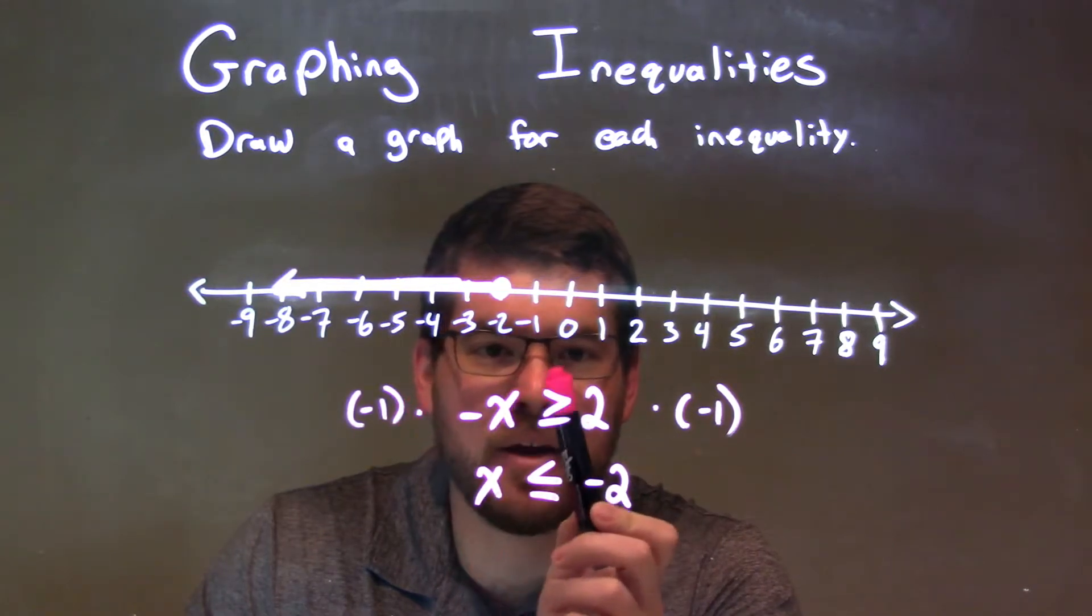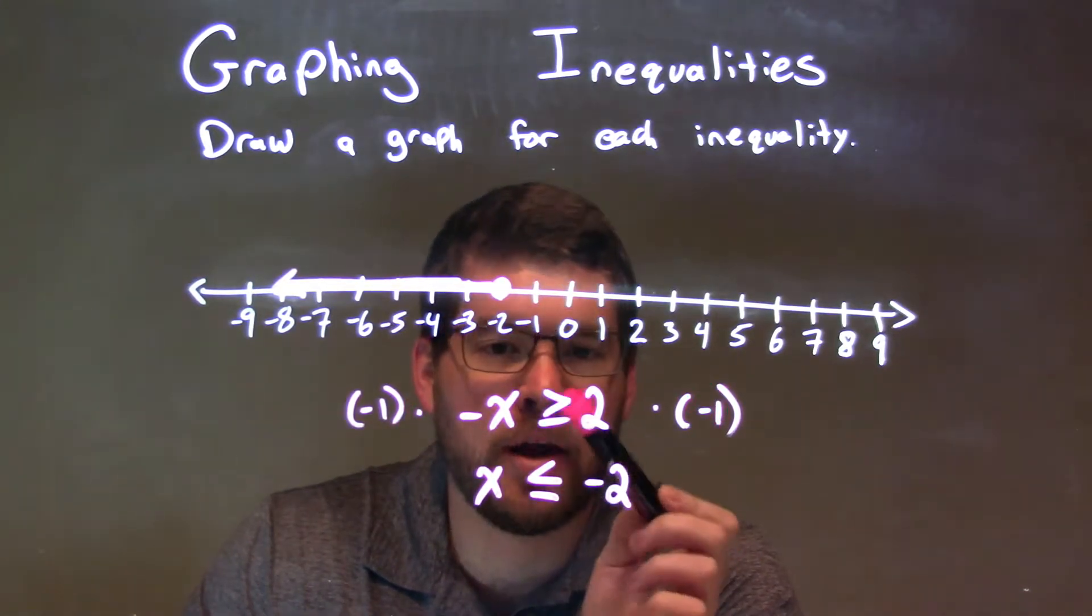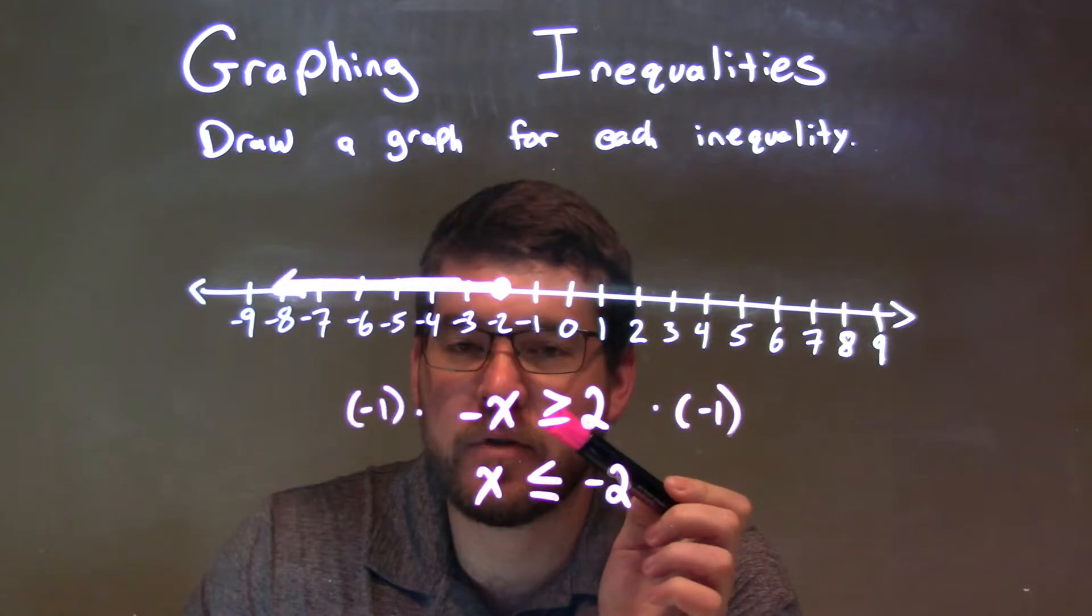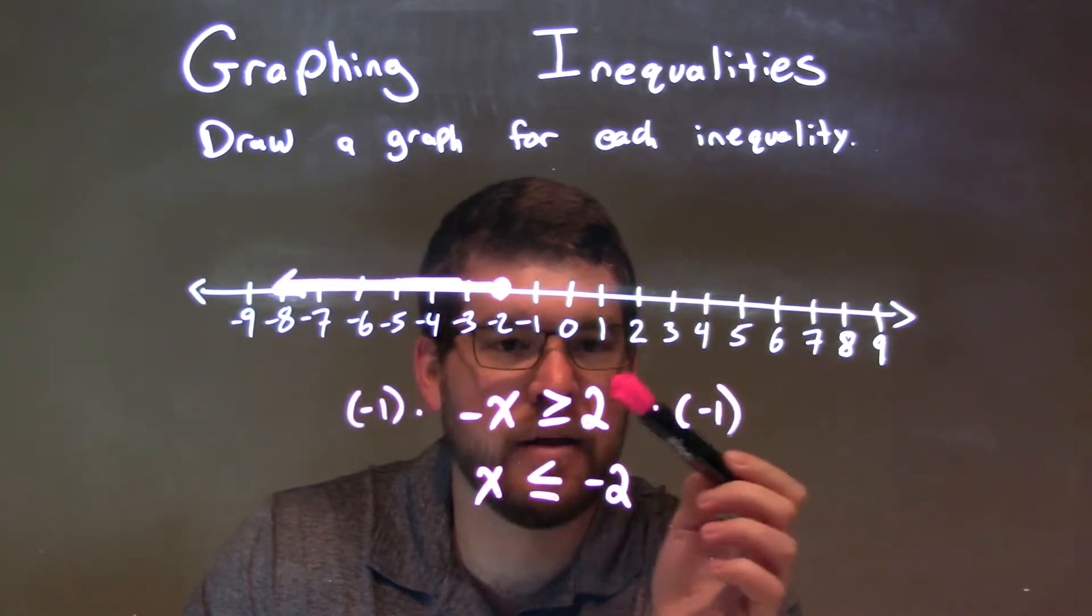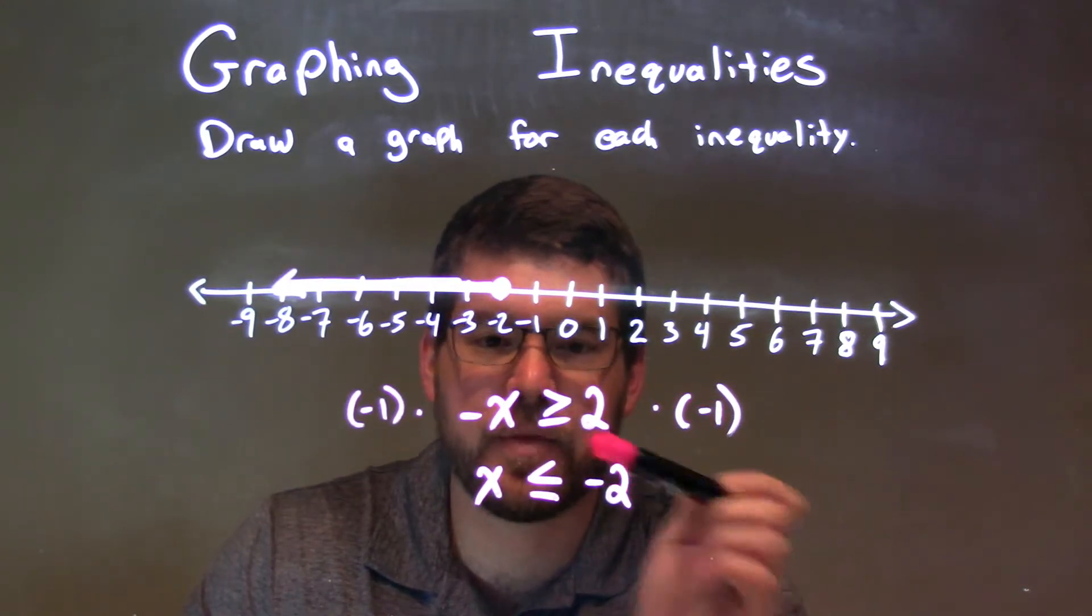Since we multiply by a negative over the inequality, our inequality flips from a greater than or equal to sign to a less than or equal to sign. Negative 1 times negative x is positive x, and 2 times negative 1 is negative 2.